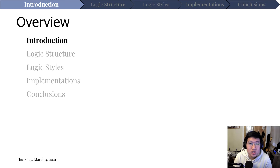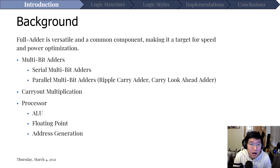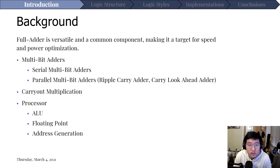Starting with a small introduction on the full adder: when looking at generally increasing the efficiency of a system, one small piece you can improve in terms of power and speed is the full adder. It's a versatile and common component used in various locations. Any multi-bit adder — serial or parallel — utilizes the full adder, as does carry-out multiplication. In the processor, the ALU, floating point, and address generation all require the full adder. So optimization in both speed and power for the full adder can lead to massive gains for the system.